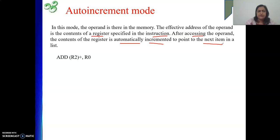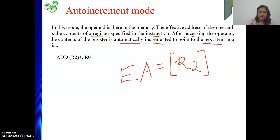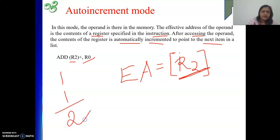Symbolically we represent it as: ADD R2+, R0. This means your data is in memory. The effective address is the content of register R2. So the content of R2 represents the address of your operand. For this instruction, how many memory references? Two — one to fetch the instruction and one to fetch the operand. That operand is added with the content of R0, and the result is also stored in R0.